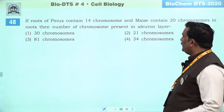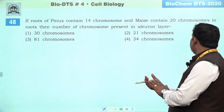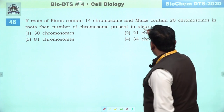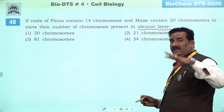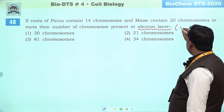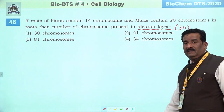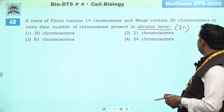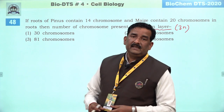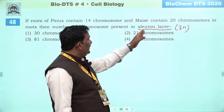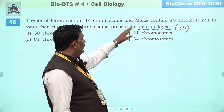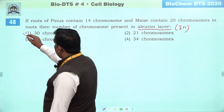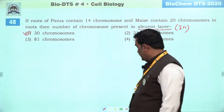Next question: if roots of Pinus contain 14 chromosomes and maize contain 20 chromosomes in roots, then number of chromosomes present in aleurone layer. Aleurone layer actually endosperm ki outer surface par present hoti hai — this is 3N and especially found in maize. Isliye hum keh sakte hain — Pinus ka iska directly koi connection nahi hai. Maize ke andar jo chromosomes hain unki basis par 3N consider karna chahiye — maize ke andar 20 chromosomes ki baat ki gayi hai, isliye 3N condition mein woh 30 chromosomes banenge. First is the right answer.